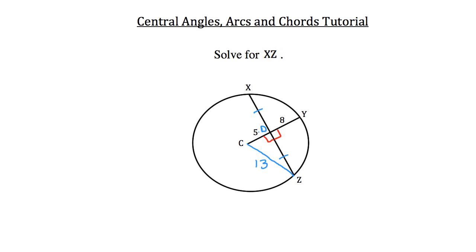So we have a right triangle here, and I'll just redraw it on the side right here. We know that the short side DC has a length of 5. And the hypotenuse across from the 90 — C to Z — has a length of 13.